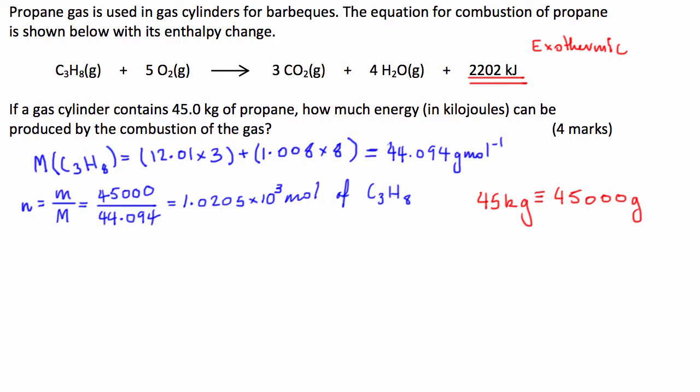Now, the next thing we're going to do is determine our molar ratios, or in this case, our enthalpy ratio, if you want to call it that. So we know that one mole of C3H8, or propane, produces 2,202 kilojoules of energy.